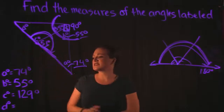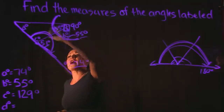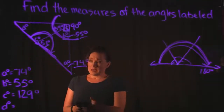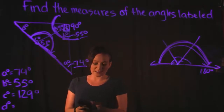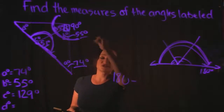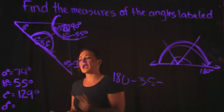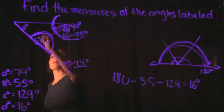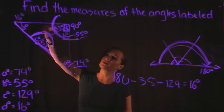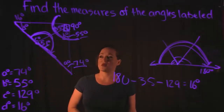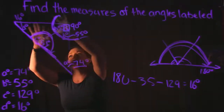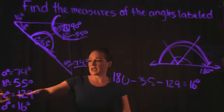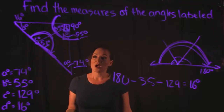Now we know angle C is 129 and the given angle is 35, so 35 plus 129 plus D has to equal 180. Taking 180 minus 35 minus 129 gives us 16 degrees. So angle D is 16 degrees. We found all four missing angles: A is 74, B is 55, C is 129, and D is 16. That fills up all the missing angles for this drawing, and that's it for this video.